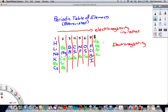As you go up a periodic table, electronegativity increases.